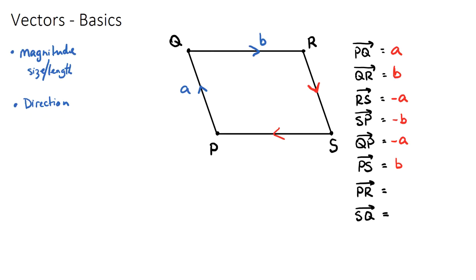The last two are a little more complex. To go from P all the way to R we need to add two vectors, and when adding vectors we use the head-to-tail method. We start at P, travel up using vector a to reach Q — that's the head — then we connect the tail of the next vector and add vector b from Q to R. So a plus b gets us from P all the way to R.